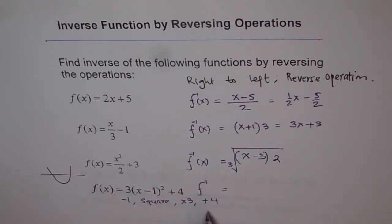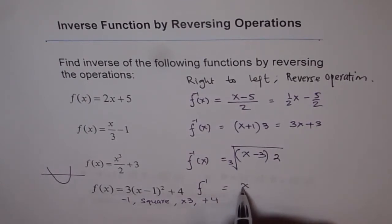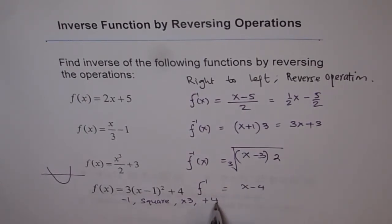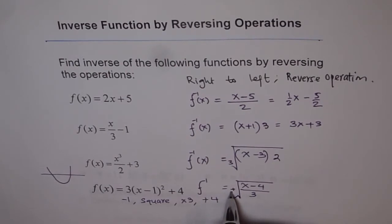So inverse is reverse. So what will you do first? Reverse of plus 4, which is minus 4. So we will do x minus 4. And then, instead of multiplying by 3, you will divide by 3. And then, instead of square, you will do square root. And remember, whenever you do square root, you have to do plus and minus.